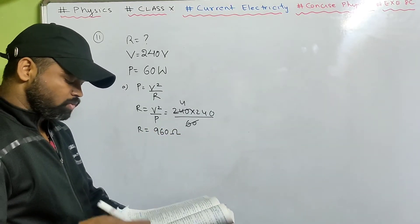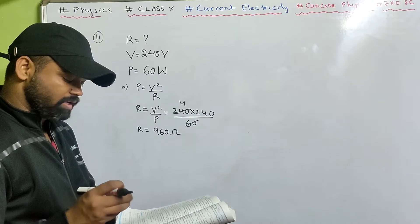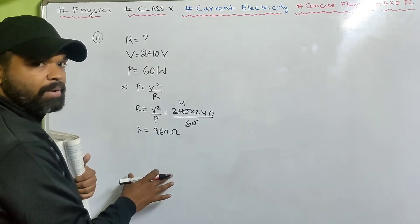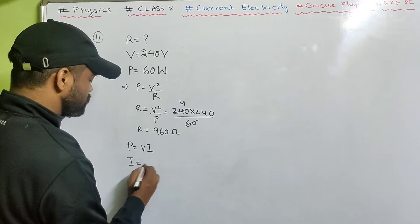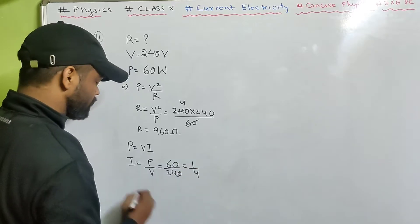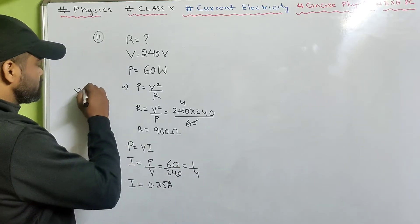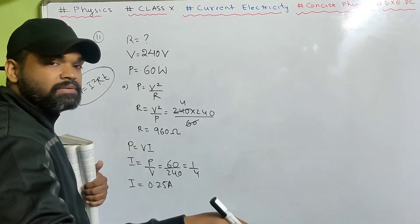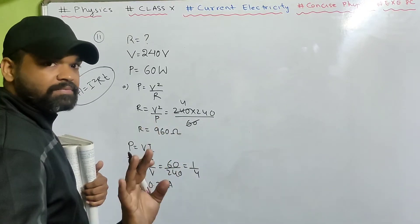If two such lamps are connected in series across 240 volt main supply, explain why each one appears less bright. First calculate the current for one lamp: power equals V into I, so I equals P by V — that's 60 by 240, which is 0.25 ampere. Heat equals I squared R T, so more current means brighter bulb.